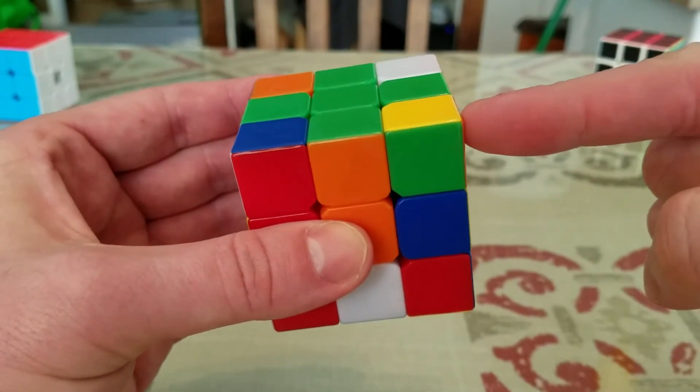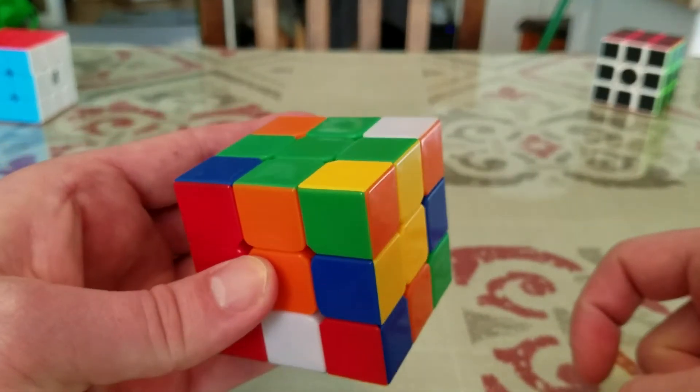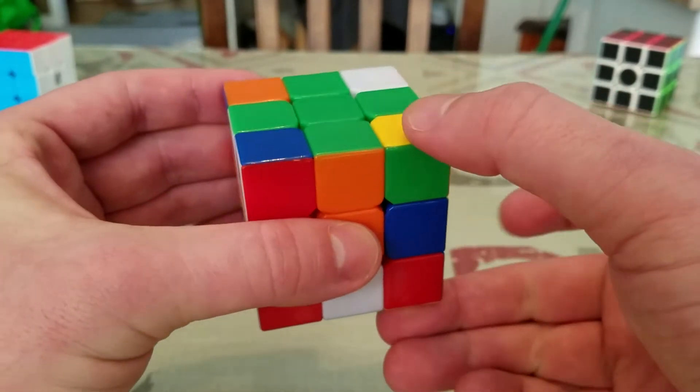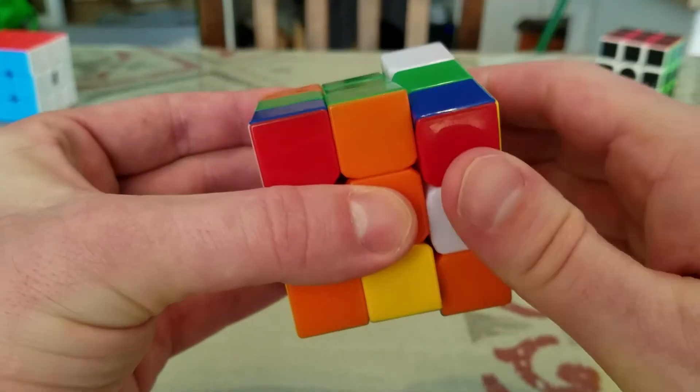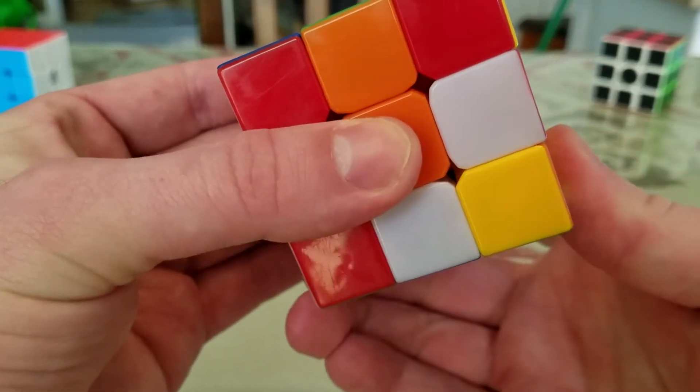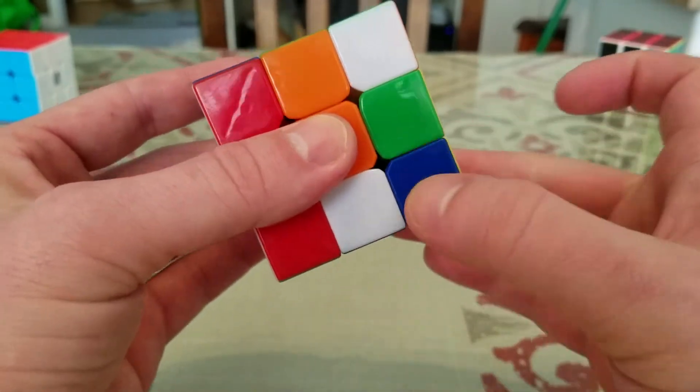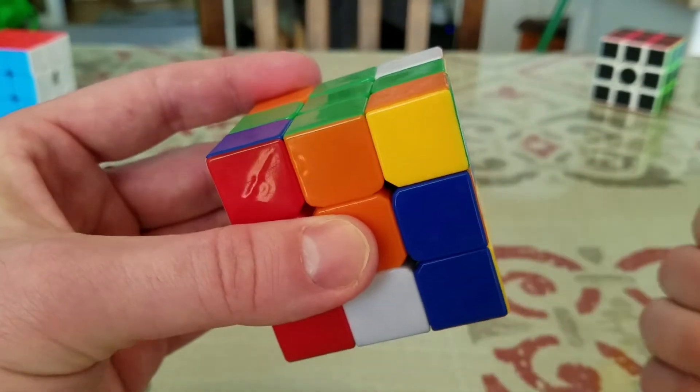Now you'll notice that the corner is in the correct spot, but the colors are not oriented correctly. So you simply do the move again. Down, bottom, back up, do the bottom again. Still not done, still not in the right spot. Sometimes it can take as much as four different attempts to get the piece in the correct spot.